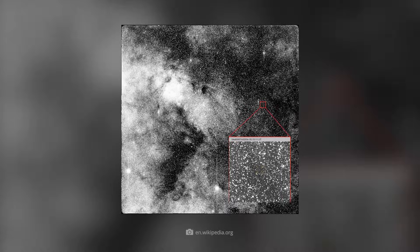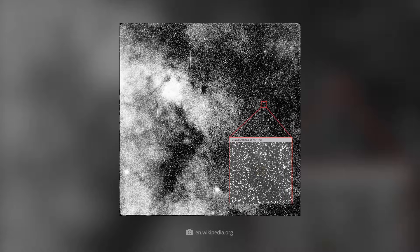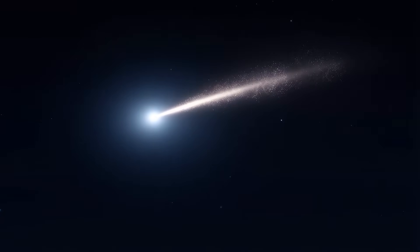The newly discovered comet 3i Atlas is racing through our solar system at over 220,000 km per hour, leaving behind a spectacular 25,000 km long tail.